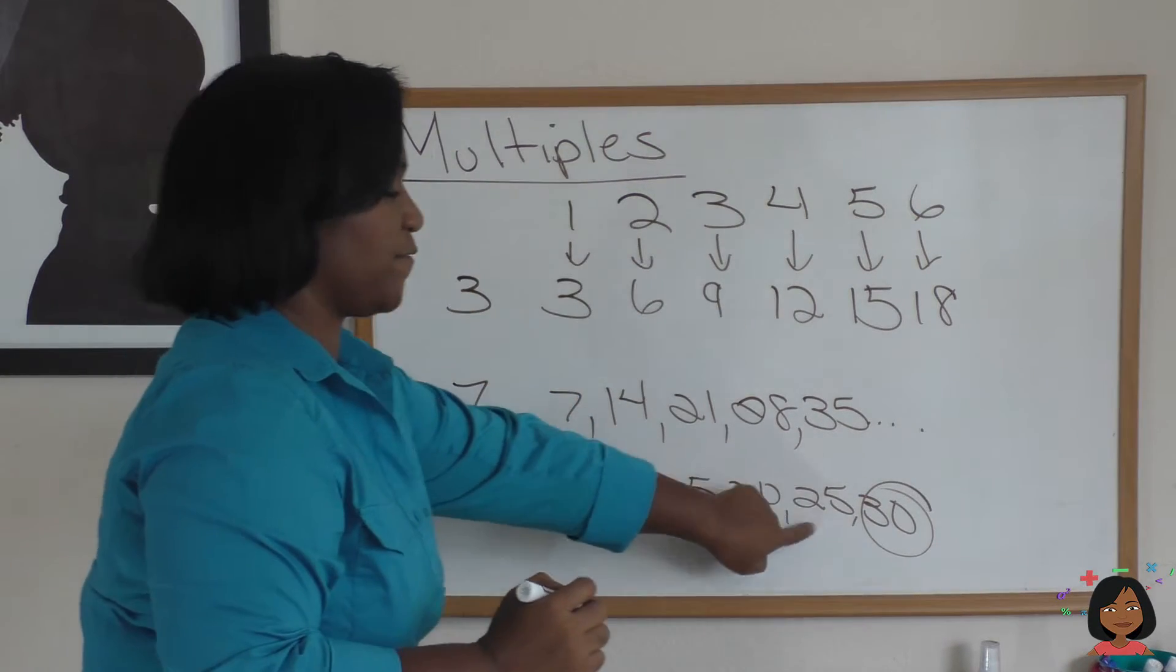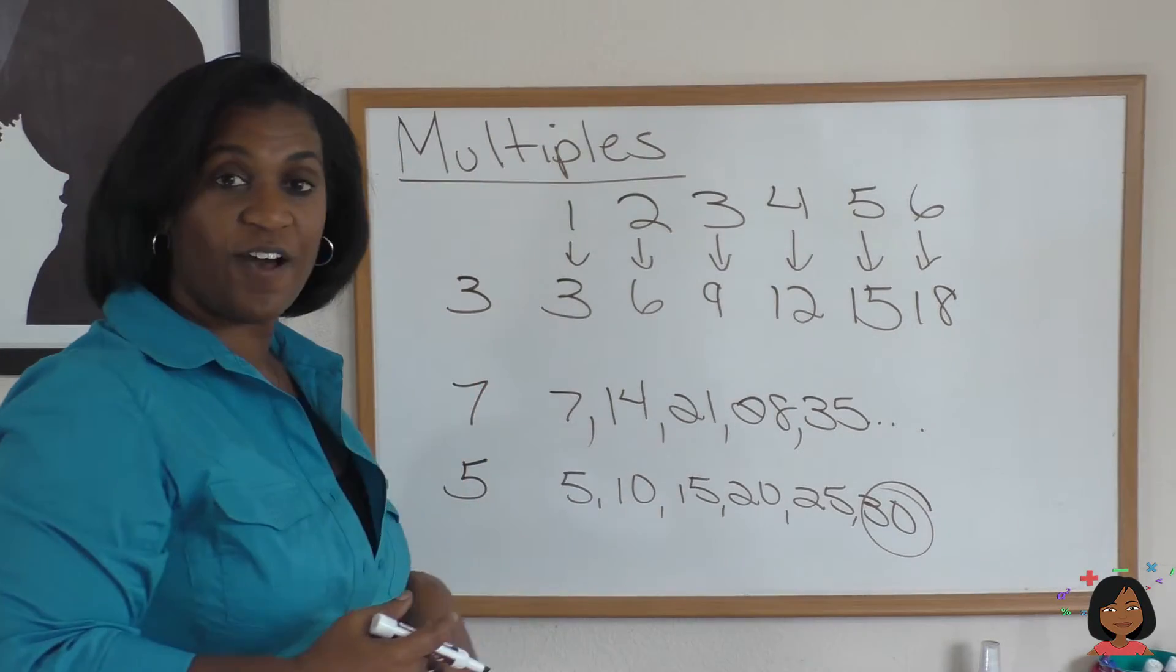And there you go. One, two, three, four, five, six. So the sixth multiple of five is 30.